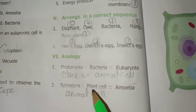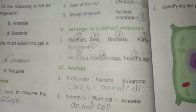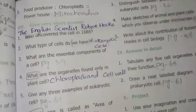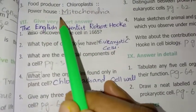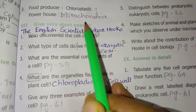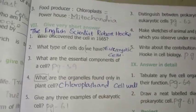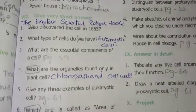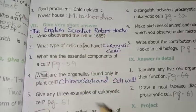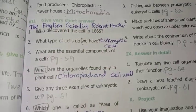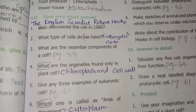Section 6 - Analogy: Prokaryote is to bacteria as eukaryotic is to plant or animal cell. Spirogyra is a plant cell; amoeba is an animal cell. Food producer is to chloroplast as powerhouse is to mitochondria. The remaining short answers will be covered in the next video. Follow and thank you.